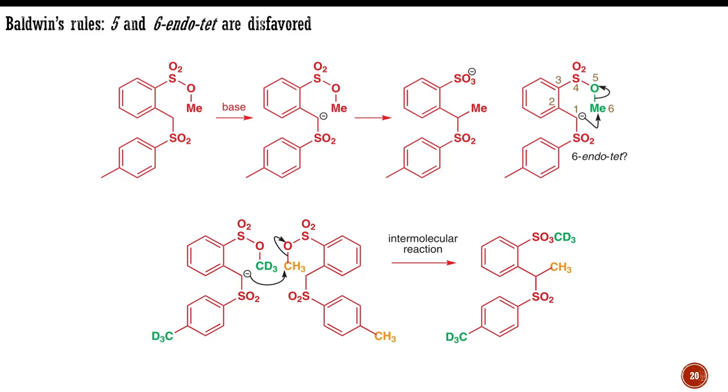He mixed together the starting material for the reaction above with the hexadeuterated compound shown below and re-ran the reaction. If the reaction had been intramolecular, the products would have contained either no deuterium or 6 deuteriums. In the event, the product mixture contained about 25% of each of these compounds, with a further 50% containing 3 deuteriums. The products cannot have been formed intramolecularly, and this distribution is exactly what would be expected from an intermolecular reaction.